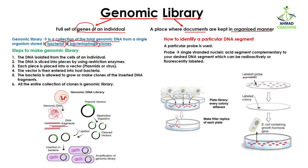To create a genomic library, the first step is to isolate the DNA from the cells of an individual. For example, if you want to study a human cell, you take the cell and remove its genomic DNA. This genomic DNA contains all the genes for that particular individual. After that, you slice the DNA into small pieces using restriction endonucleases, also called restriction enzymes.